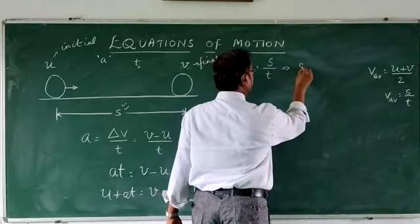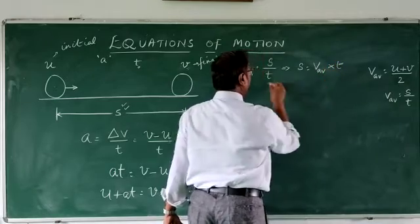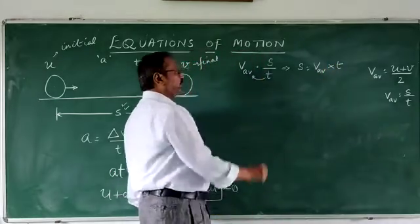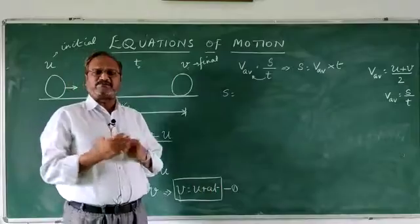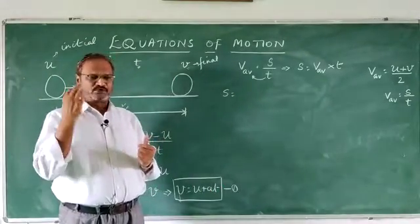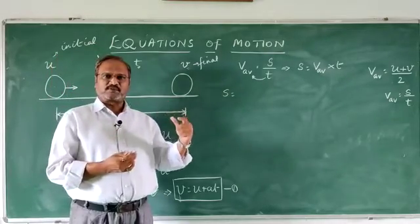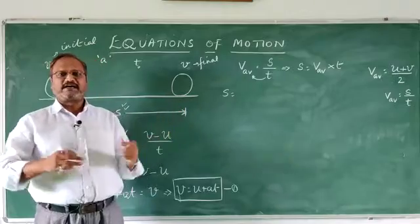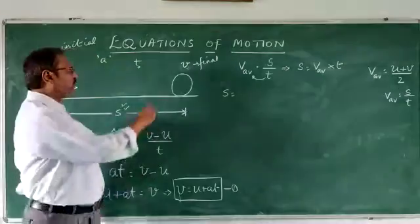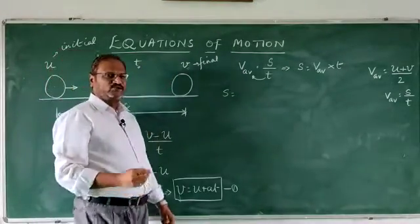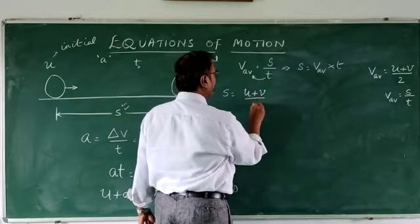Now, I want the distance. S is equal to V average multiplied by time taken. Now, I write again. S is equal to, what is V average? You have three subjects. Let us say in science. Physics, Chemistry and Biology. I ask you what is the average. What do you do? Add Physics mark, Chemistry mark, Biology mark and divide by 3. So, how many quantities are there? Here, there are two quantities. U and V.